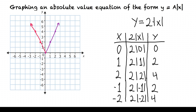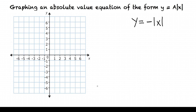What if a is negative? Let's do one more example. Consider the function y equals negative absolute value of x. This is the form y equals a times the absolute value of x where a equals negative 1. Since it's in this form, we know that the vertex is at (0, 0). Let's plot that.